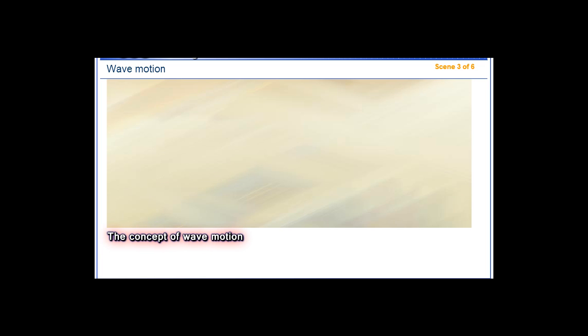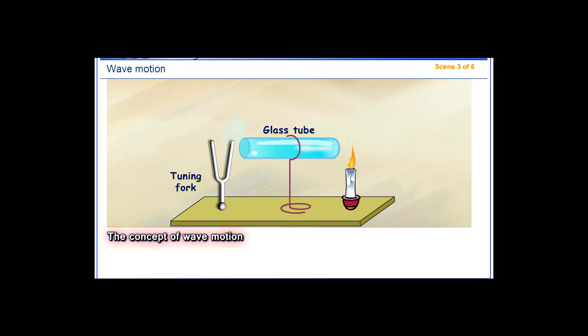The concept of wave motion. To understand the concept of wave motion, we can carry out this activity. Place a glass tube horizontally, and place a lit candle at one of its ends, and a tuning fork and synth stick at the other end. We will notice that the candle flame starts to move.